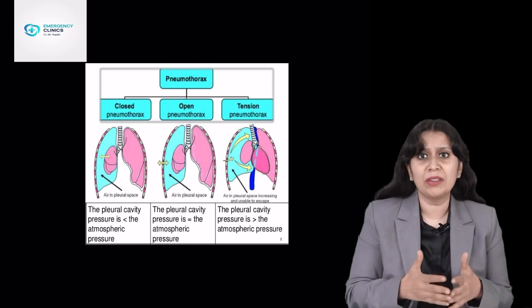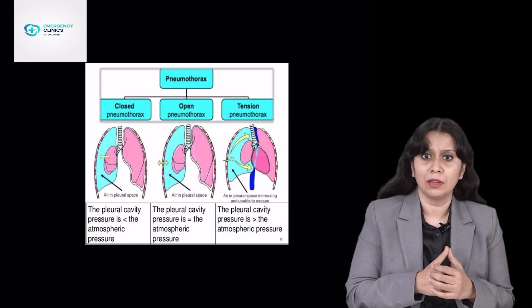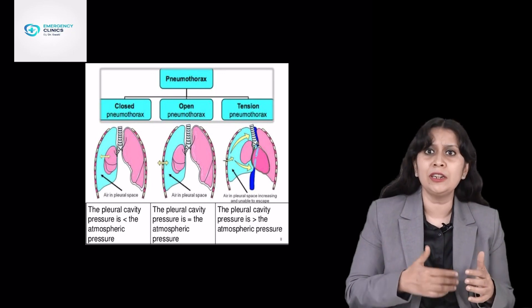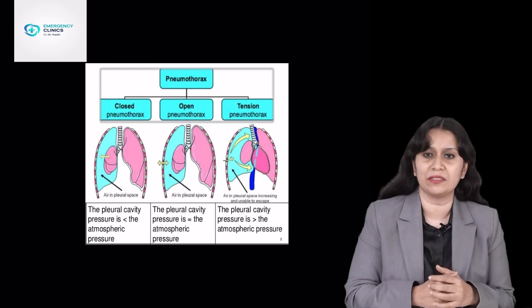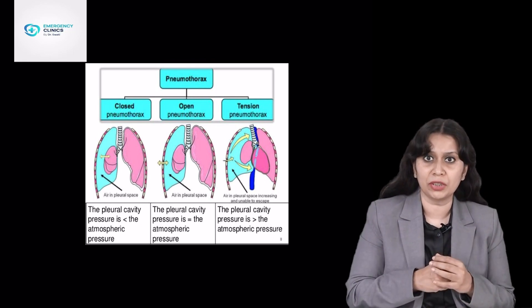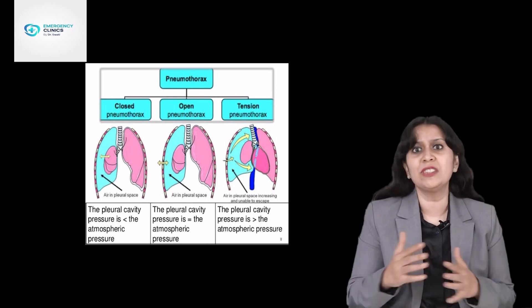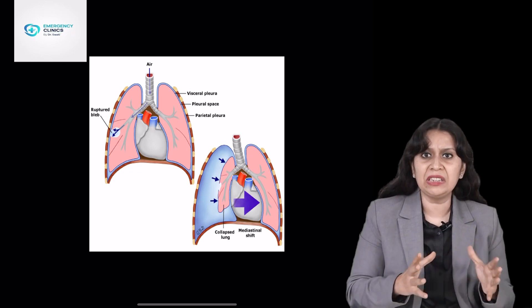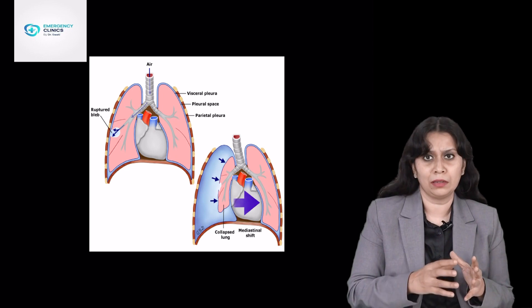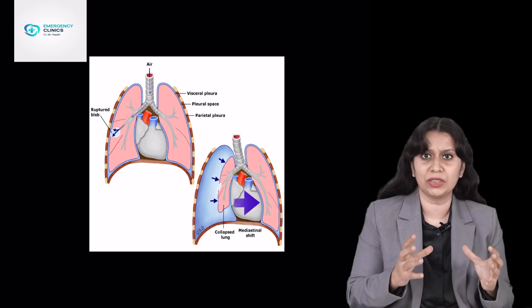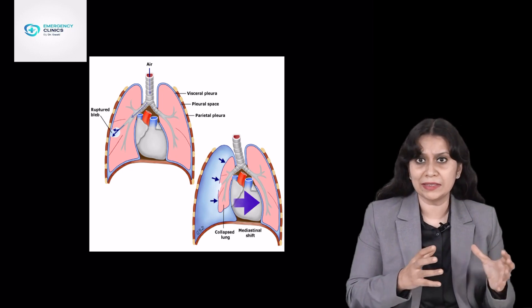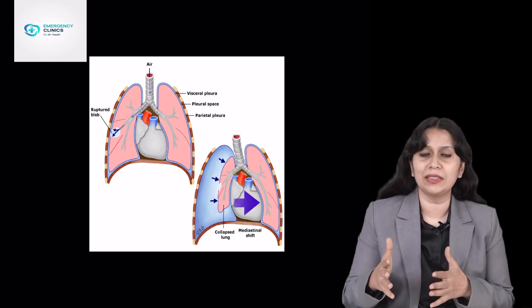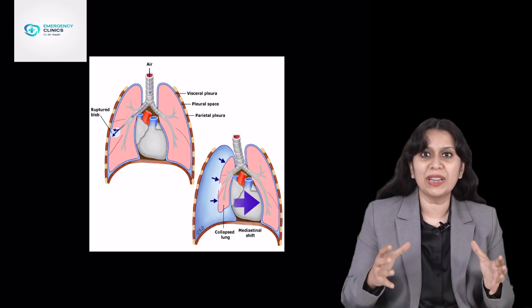Progressively, the intrapleural pressure is increasing. Normally the intrapleural pressure is negative, but here it becomes increasingly positive. This increased intrapleural pressure not only produces respiratory compromise but also cardiovascular compromise. Because of the increased air collection in the pleural space, the lung on the same side is getting compressed, and this is pushing the mediastinum. The increased air collection is pushing the mediastinum to the other side and also compressing the heart.